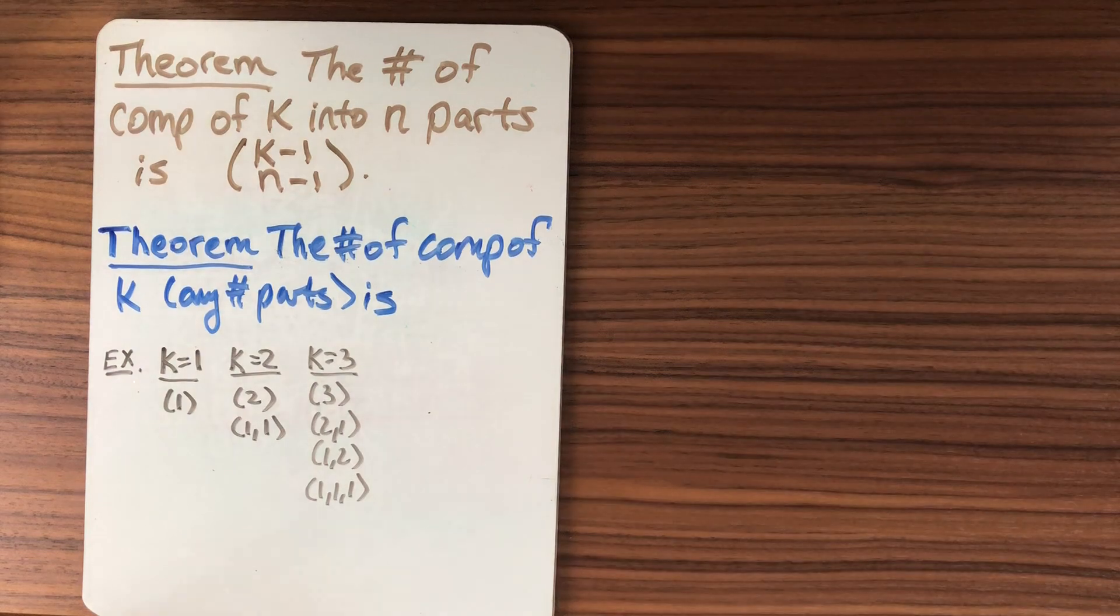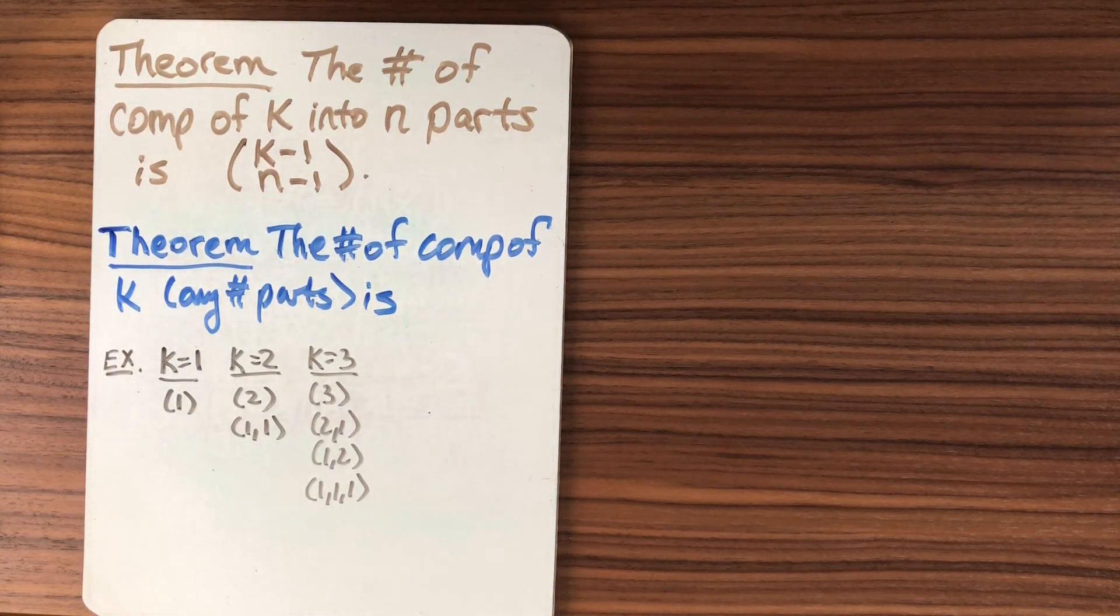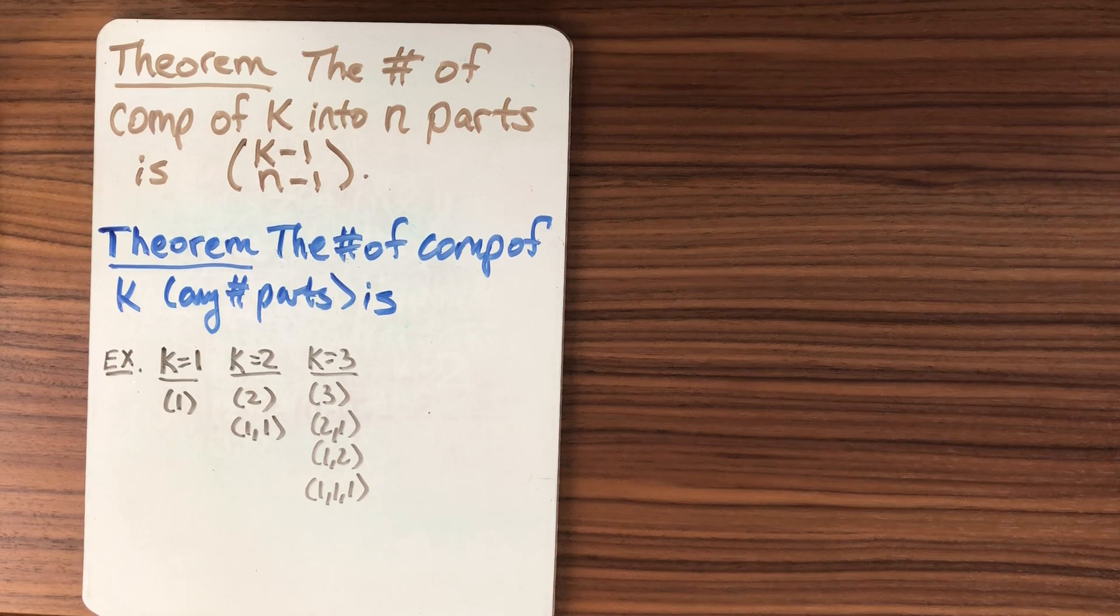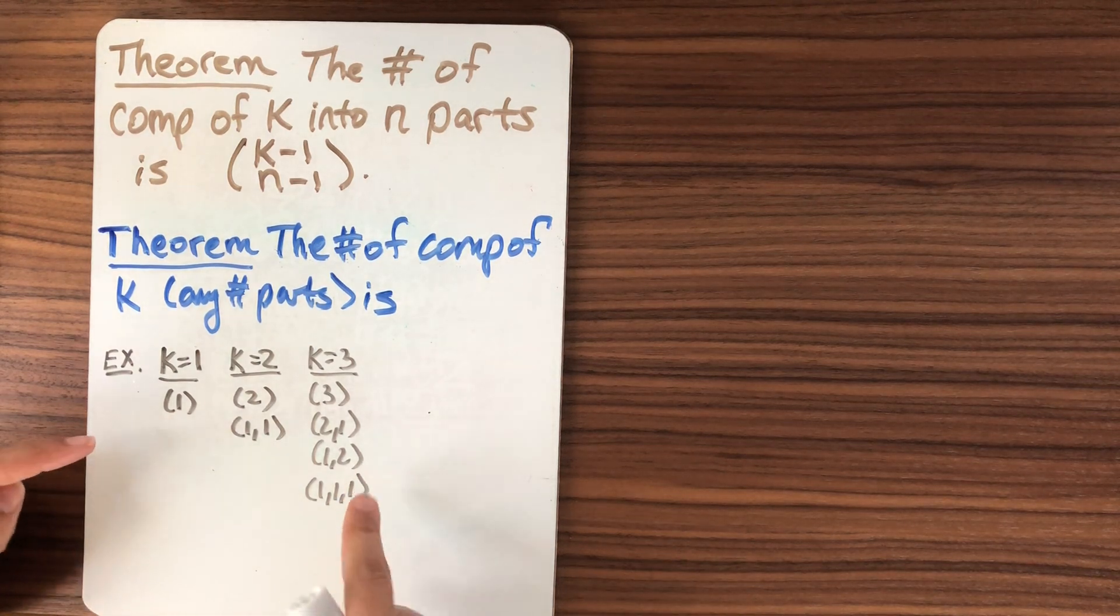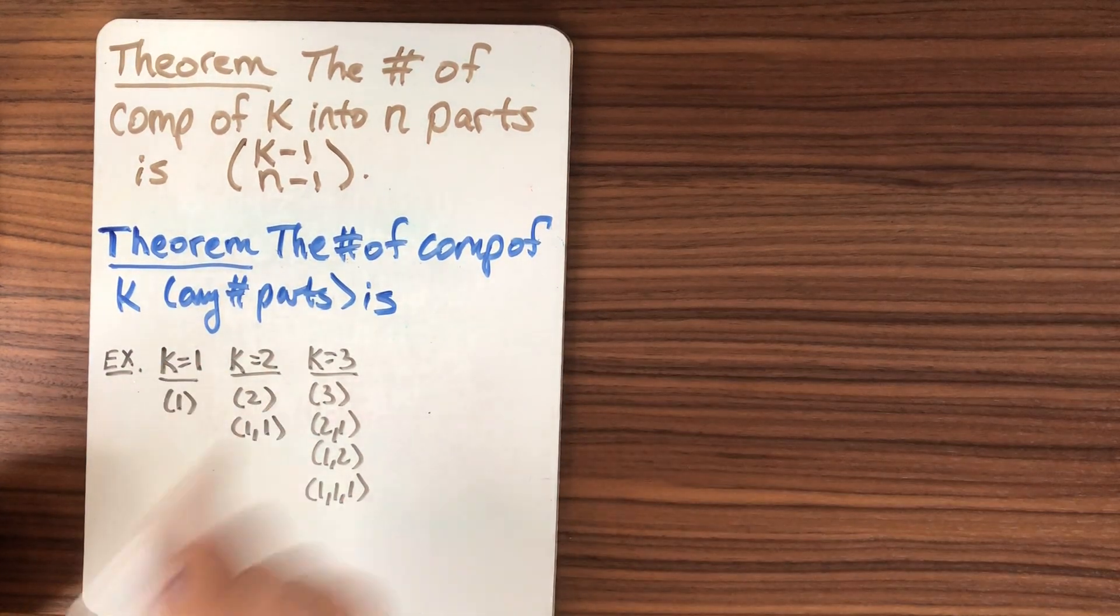Okay, I could maybe start guessing it's going to be powers of two. And that's not a bad guess, given that I have binomial coefficients around. And then I can ask myself, okay, it's two to the what? In terms of k, right?